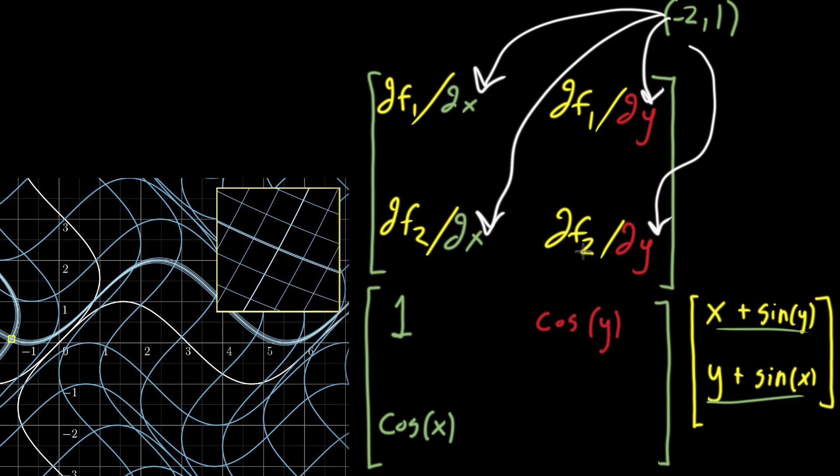And then finally, the partial derivative of the second component with respect to y looks like 1, because it's just 1 times y plus some constant. And this is the general Jacobian, as a function of x and y.